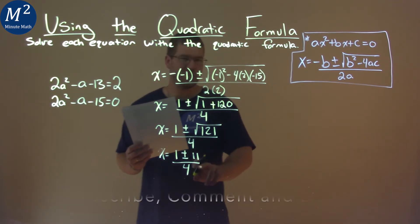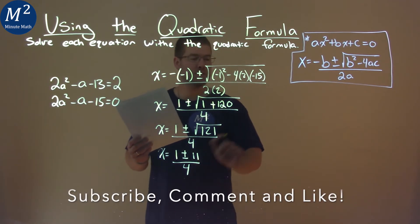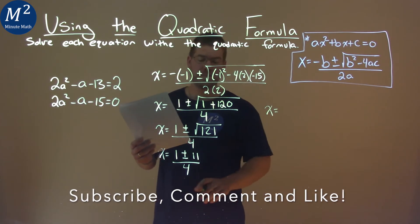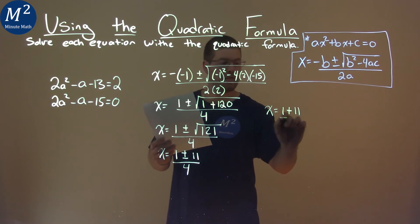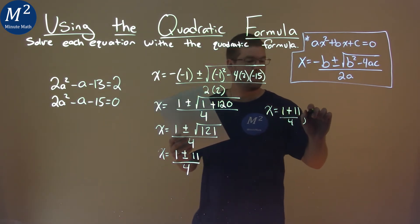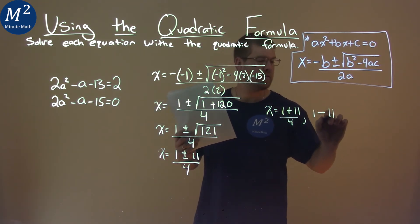At this point, I like to break it up and solve each part individually. We have a plus and minus, so we have 1 plus 11 over 4, and x equals 1 minus 11 over 4.